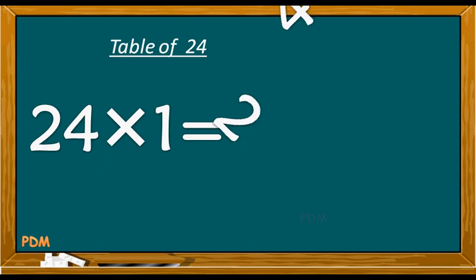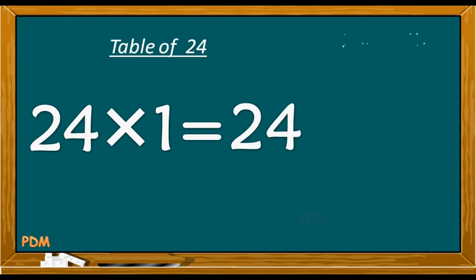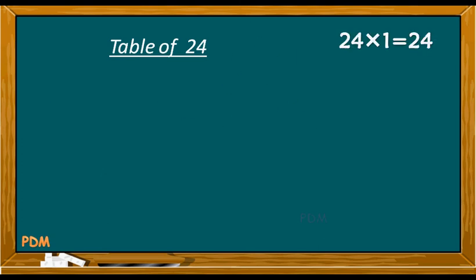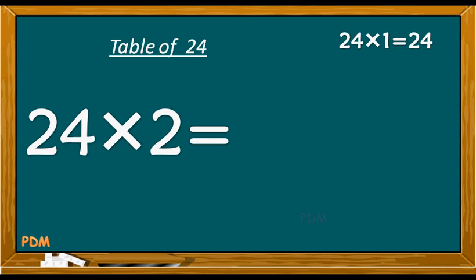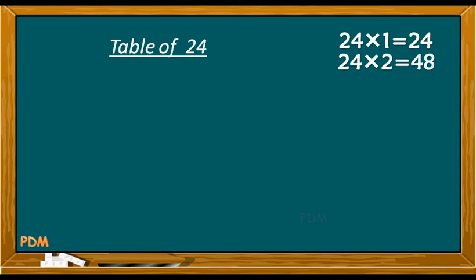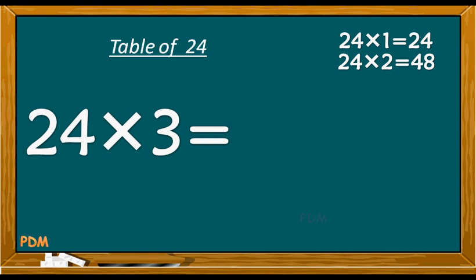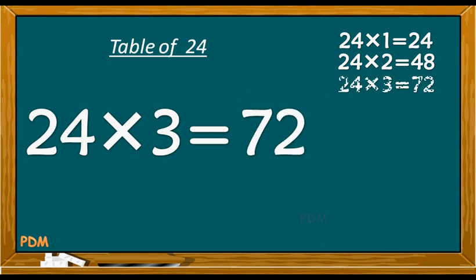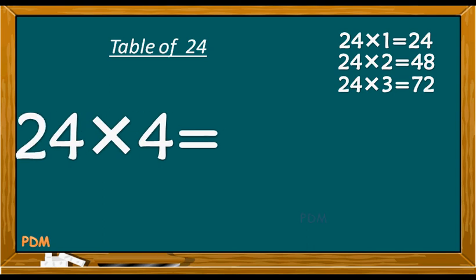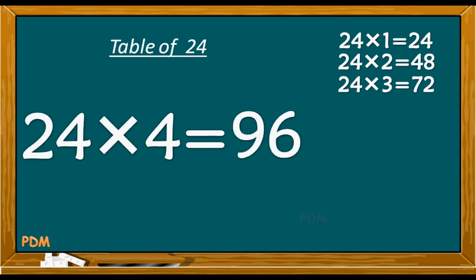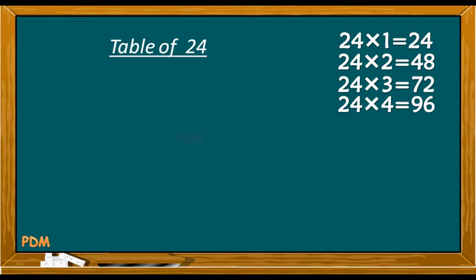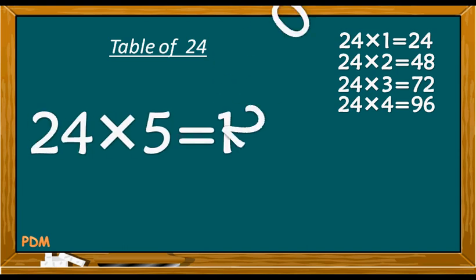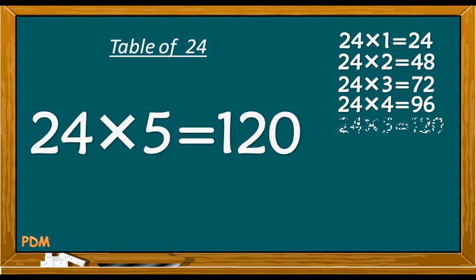24 1s are 24. 24 2s are 48. 24 3s are 72. 24 4s are 96. 24 5s are 120.